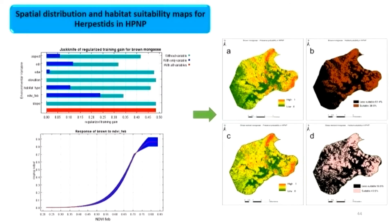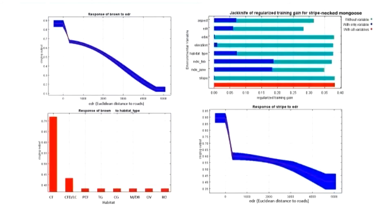Moving on to Horton Plains. Here, two mongoose species were present: the brown mongoose and the stripe-necked mongoose — the largest mongoose in the country. Both are very abundant near roads and habitat edges. This is the Pattipola area and the Ohiya area. Interestingly, these two species were more abundant nearby habitat edges; however, they also required the presence of cloud forest, which was important again.